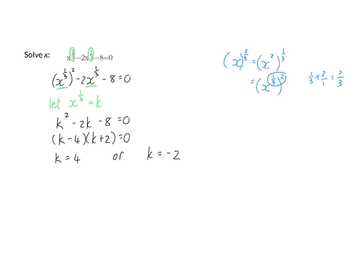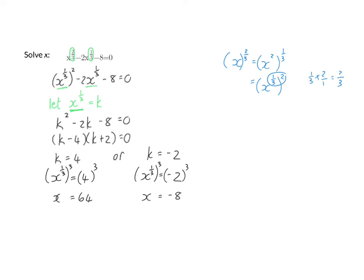Now I need to remember that k is actually x to the power of a third. So I'm going to substitute back: x to the power of a third equals 4, and now I'm going to raise that to the power of 3 on both sides, which means x is equal to 64. For the second solution, x to the power of a third equals minus 2, which is perfectly fine because the numerator and denominator are both odd, so it can be equal to a negative. Raising to the power of 3 gives x equals minus 8.